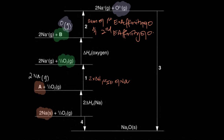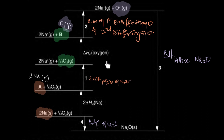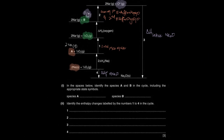Reaction number three is the standard lattice enthalpy of sodium oxide: ΔH_lattice of Na₂O. Reaction number four is the ΔHf — the standard enthalpy of formation of Na₂O. So to summarize: reaction one is twice the first ionization energy of sodium; reaction two is the sum of the first and second electron affinities of oxygen; reaction three is the lattice enthalpy of sodium oxide; reaction four is the ΔHf of sodium oxide.